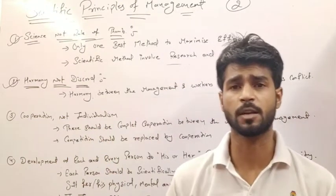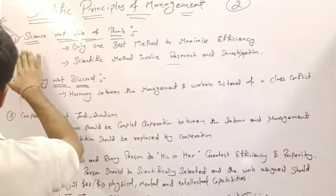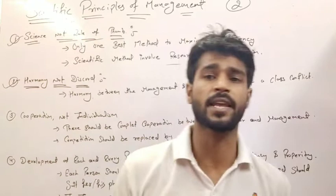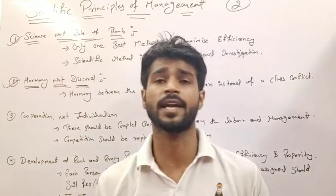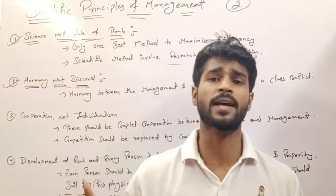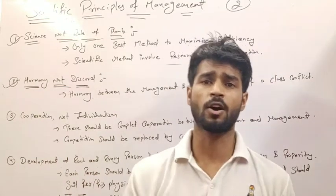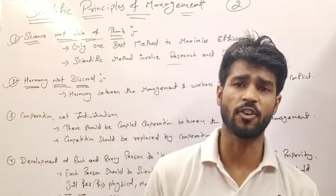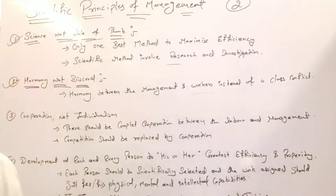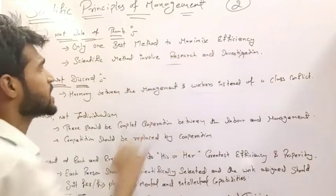The first principle is science, not rule of thumb. It means that the traditional approach is to be replaced by a new approach. We use methods in which our organization costs less and can work efficiently. In this way, only one best method is found to maximize efficiency.